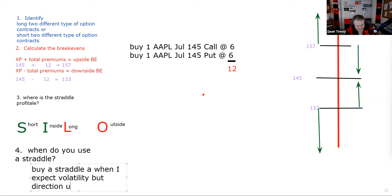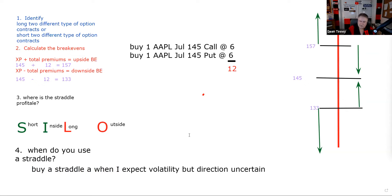You sell a straddle when you expect a trading range. Do you think Apple is going to stay between 133 and 157? If so, there's a way to profit from the stock staying within the trading range. So you sell a straddle when you expect a neutral, range-bound market.